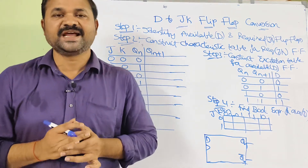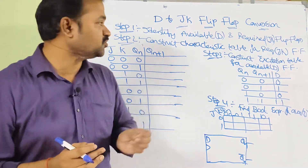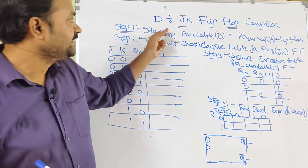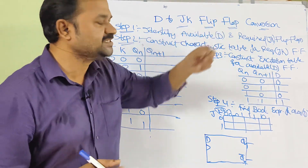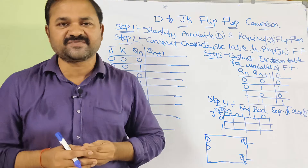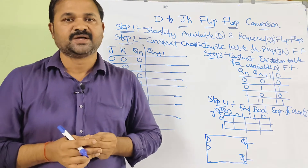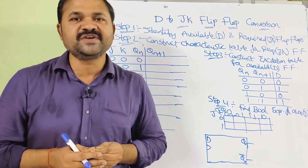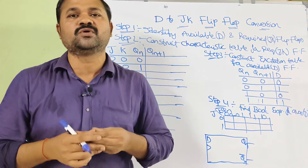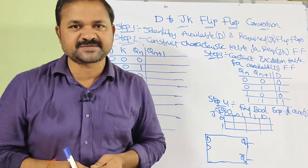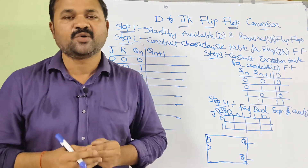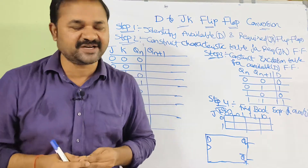Now, let us discuss here about D to JK flip-flop conversion. Here we have to follow 5 steps. Now let us see one by one.